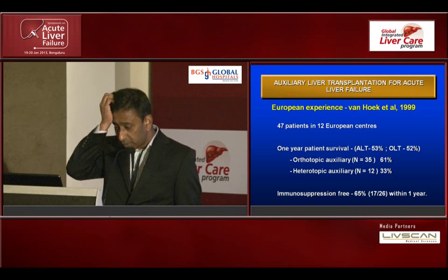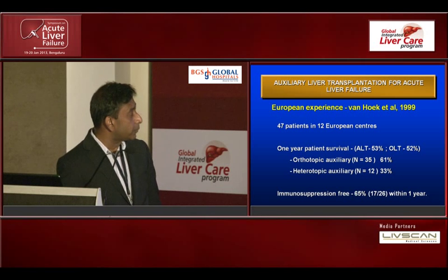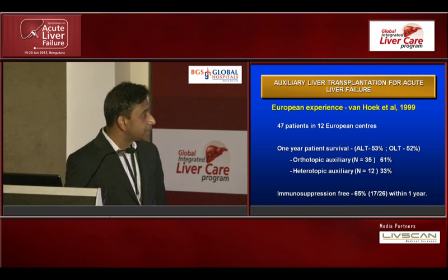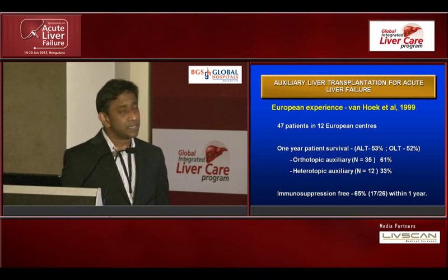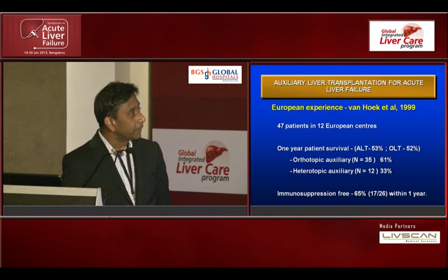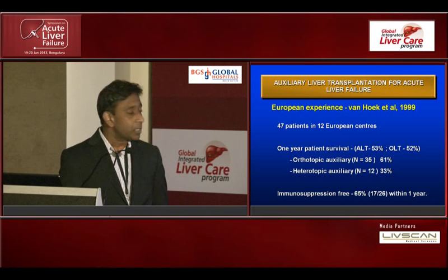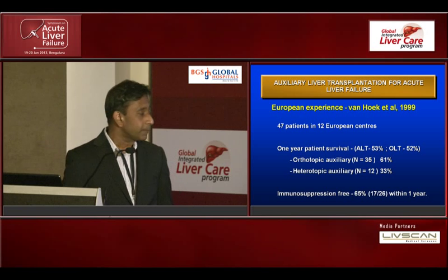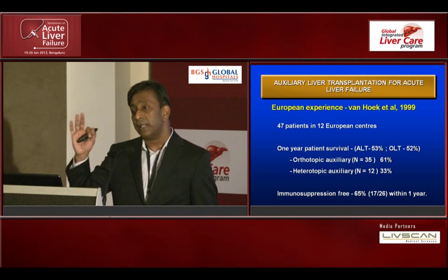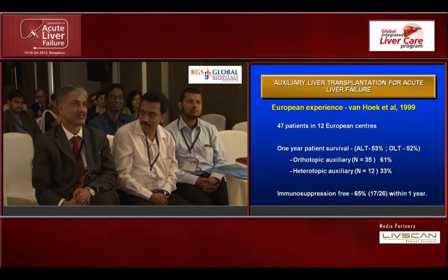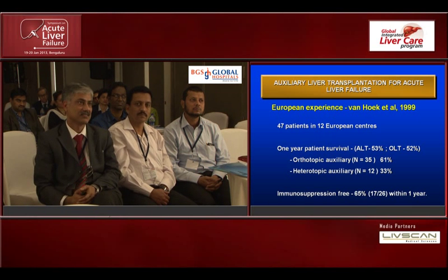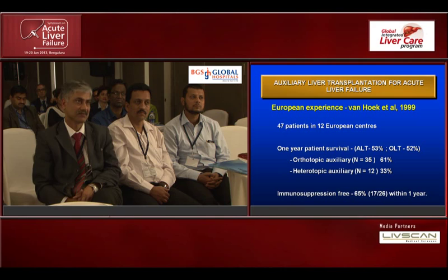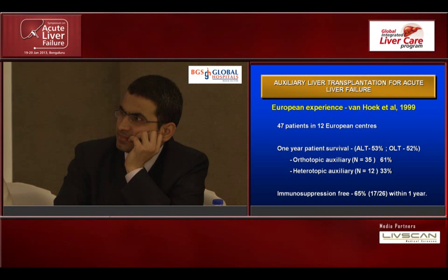If you look at the first publication — about 10 or 12 of those patients were our own — it was a European publication: 42 patients from 12 European centers, each contributing very little. One-year survival for auxiliary liver transplant was only 53%. But historically, looking at registry data, survival for orthotopic liver transplant for acute liver failure over the same period was only 52%, so it's not that different. And when you did an orthotopic auxiliary versus heterotopic, it was 61% versus 33%. Most importantly, when they survived, 65% — two-thirds of patients — could be taken off immunosuppression. So this was a very important study.